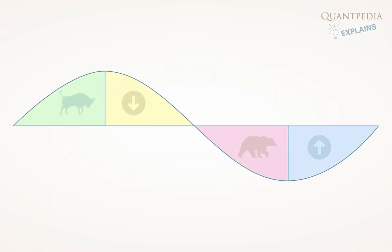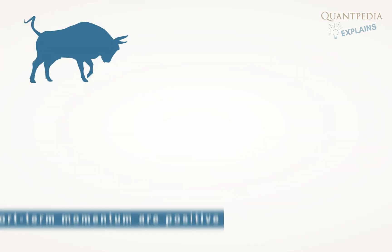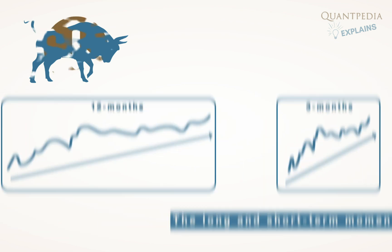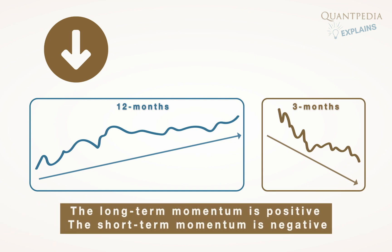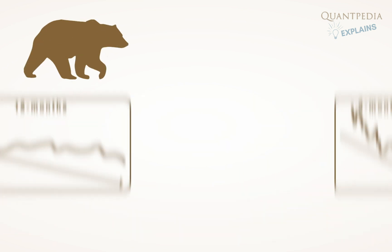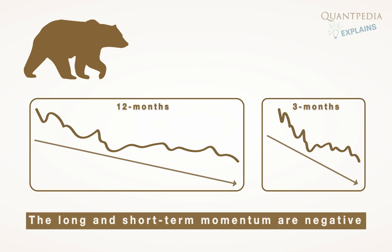These four phases consist of the bull market, correction, bear market, and recovery. The bull market is a phase when both the long and short-term momentum of the stock market are positive. Correction is defined by positive long-term momentum but negative short-term momentum. The bear market is signaled by negative both long and short-term momentum.